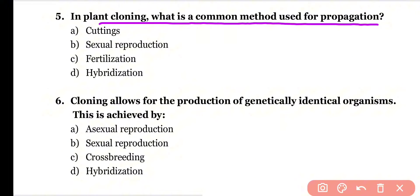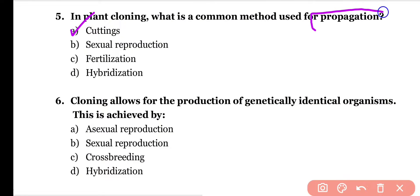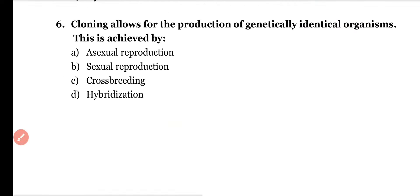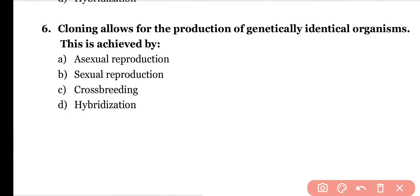Question number five: In plant cloning, what is the common method used for propagation? Options: cutting, sexual reproduction, fertilization, hybridization. Correct answer is option A. Cutting is the most common method for propagation of plants.